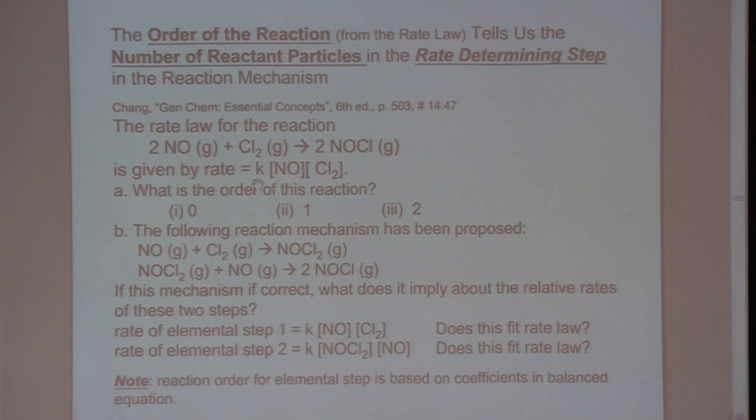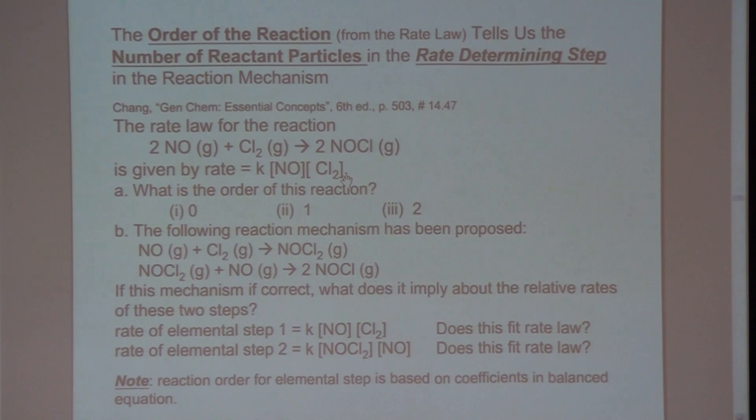This reaction is given by this rate law so the rate is equal to rate constant K times NO to the first power times Cl2 to the first power. So what is the overall order of this reaction? Is it zero, one or two? Okay so note that it's first order in NO, first order in Cl2, so the overall order, if you add up the individual orders, is two. So this tells us that in the rate determining step in this reaction you need one NO molecule and one Cl2 molecule to collide together in the slowest step in the reaction.